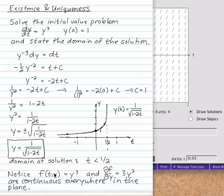But you see in the original problem, the slope function was y cubed. And the partial derivative with respect to y was 3y squared. Those functions are continuous everywhere in the plane. There was no hint that there would be a problem with this solution.